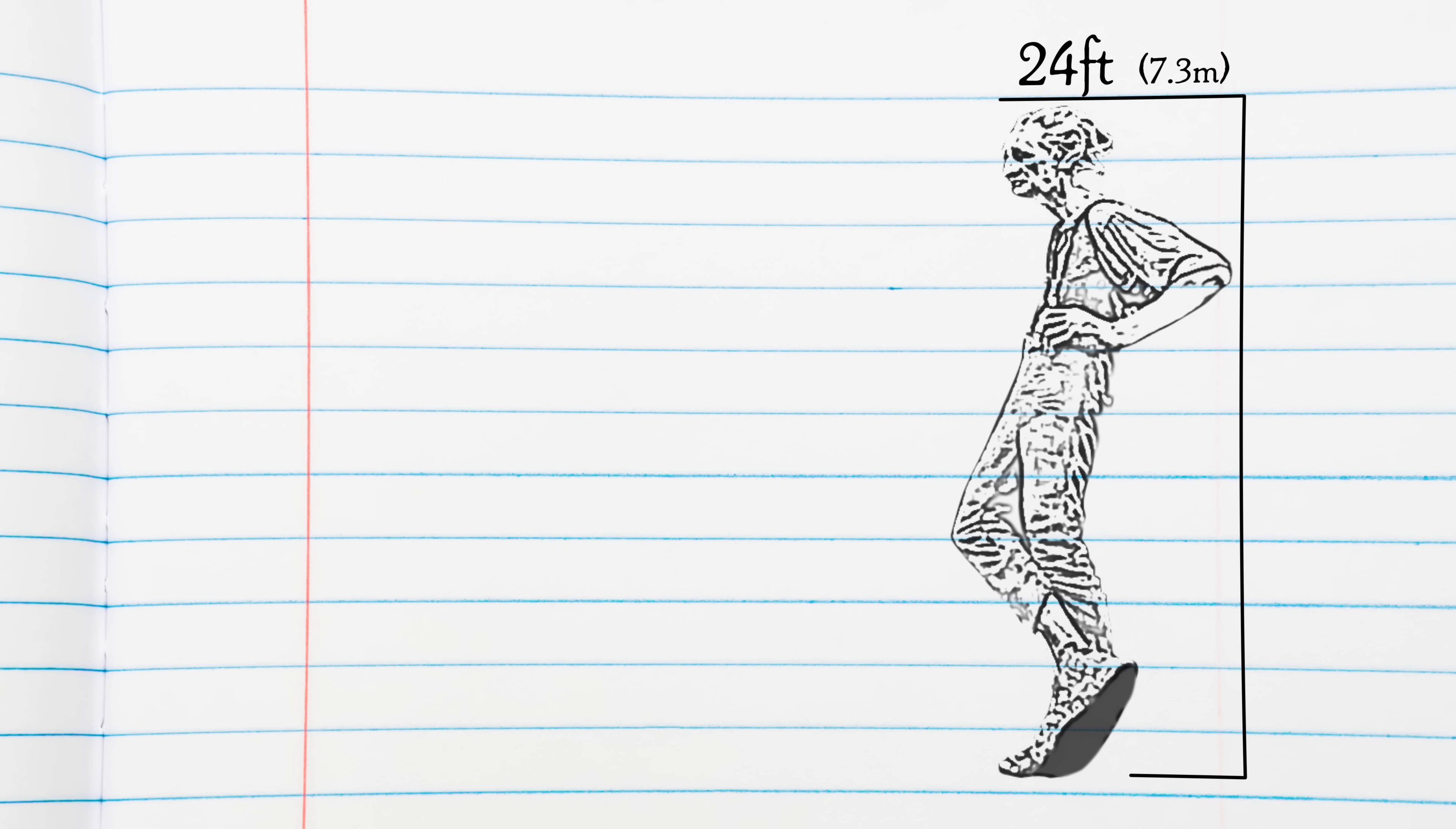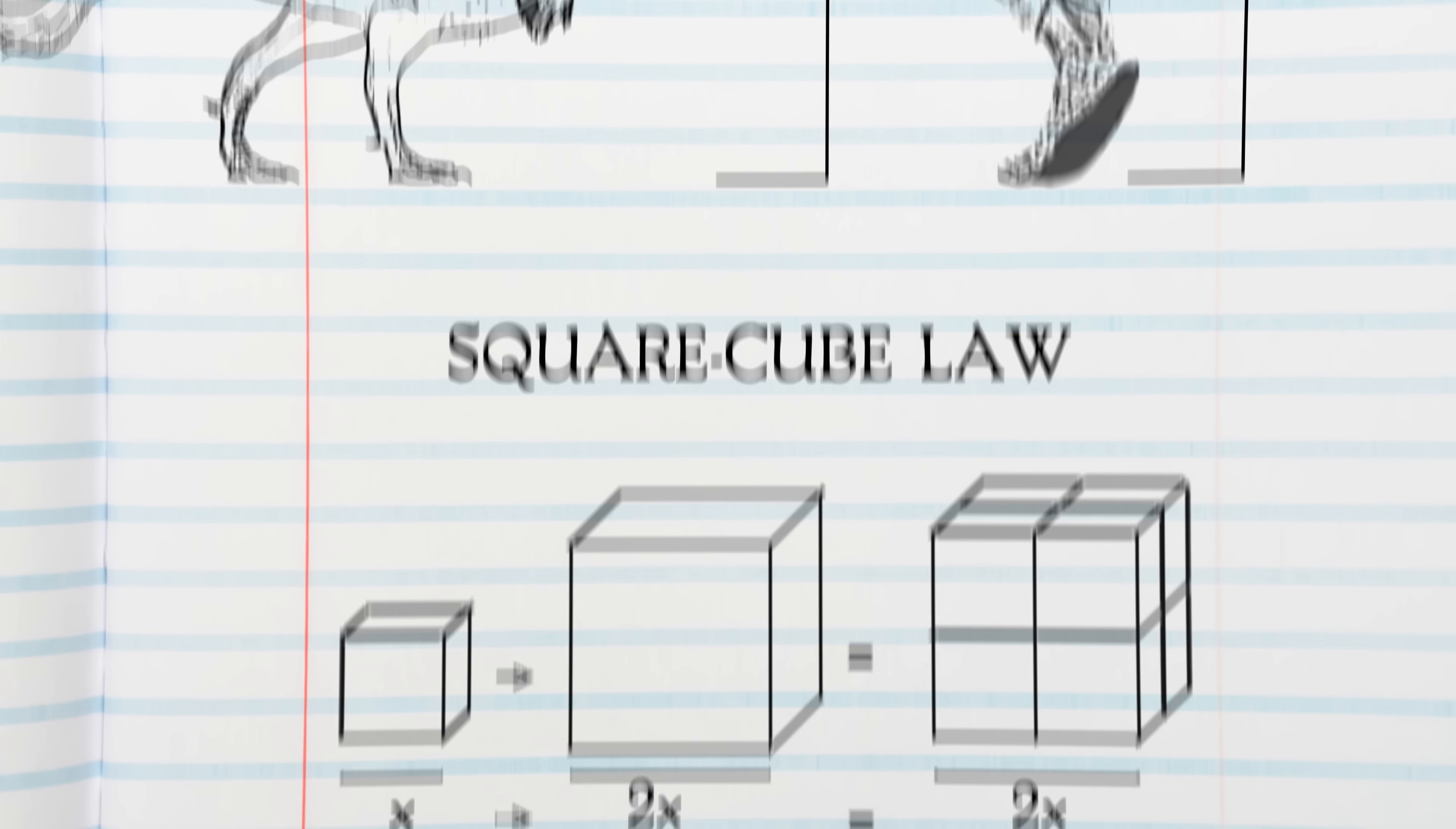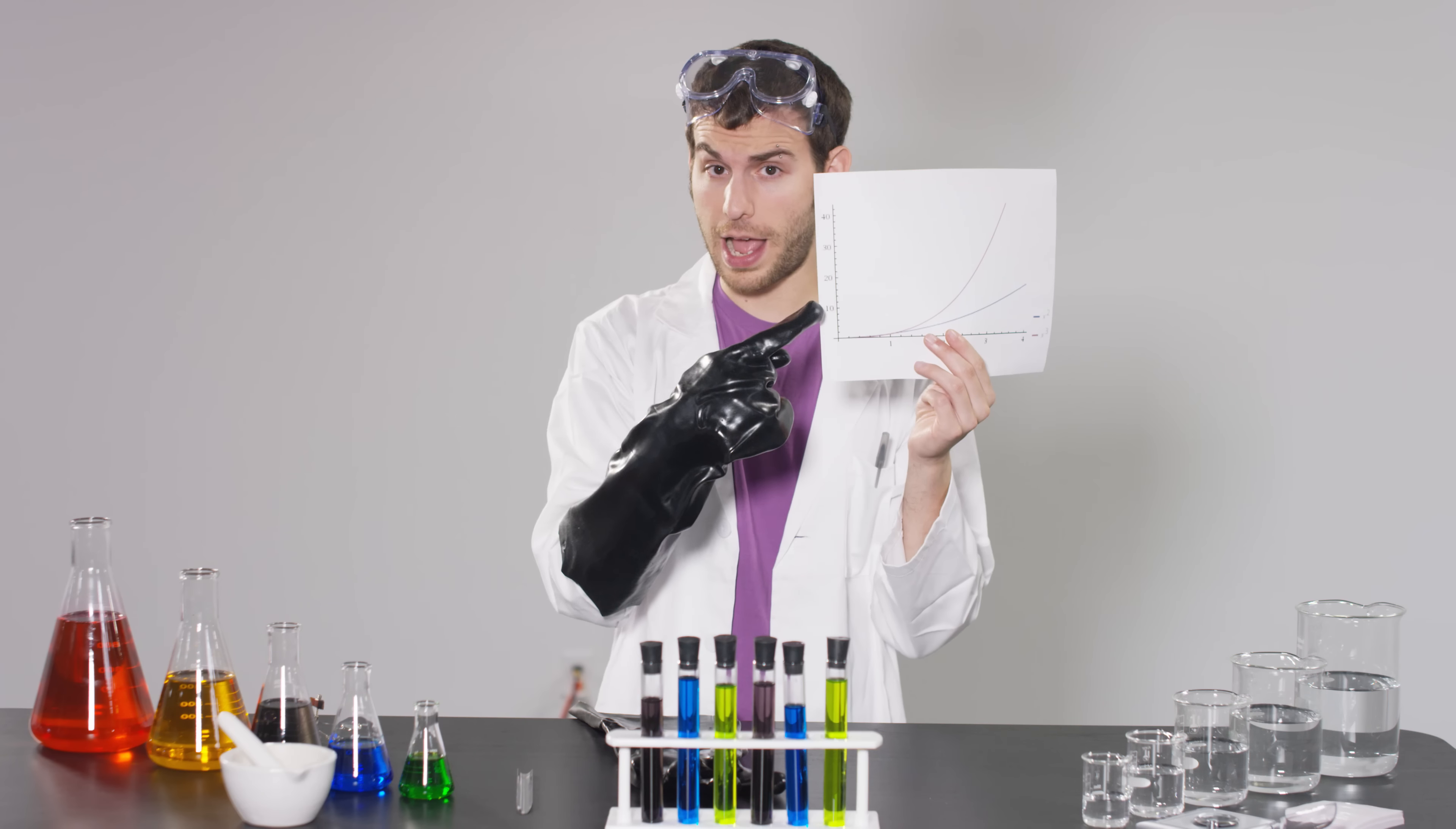The BFG is 24 feet tall, taller than a T-Rex. However, we can't just scale a normal person up by a factor of 4 due to the square-cube law, which states, you know, actually, I made a graph.